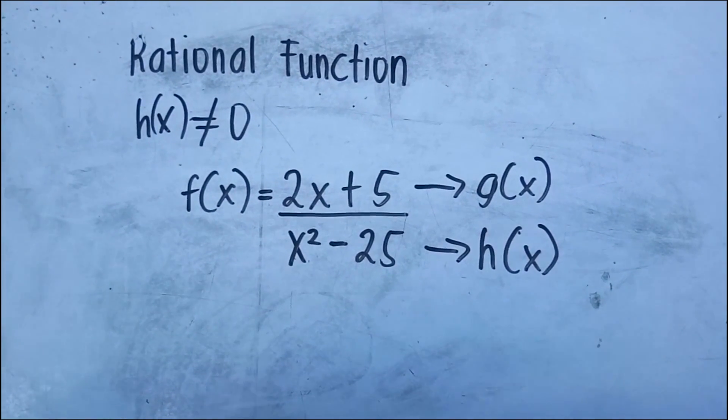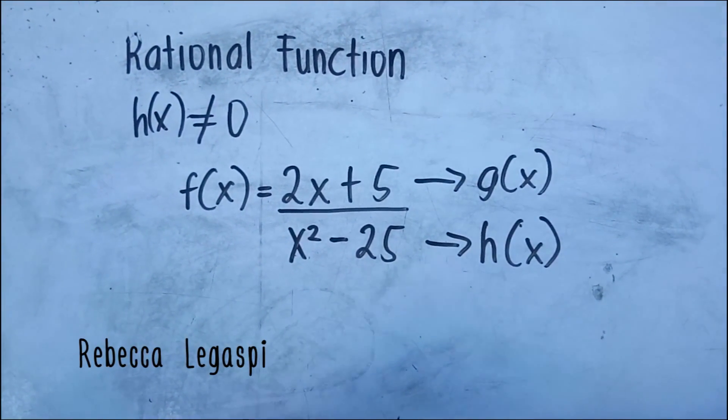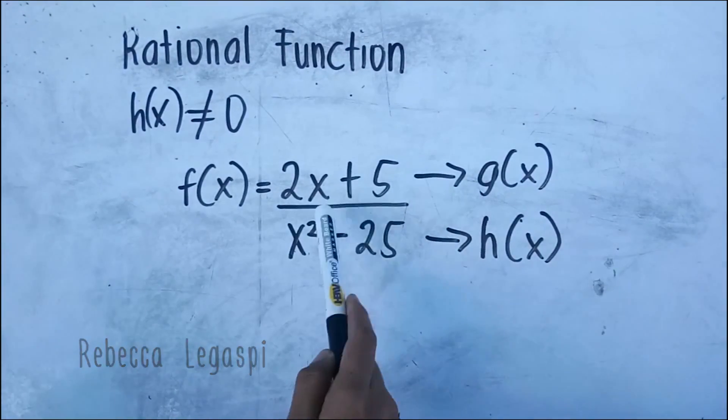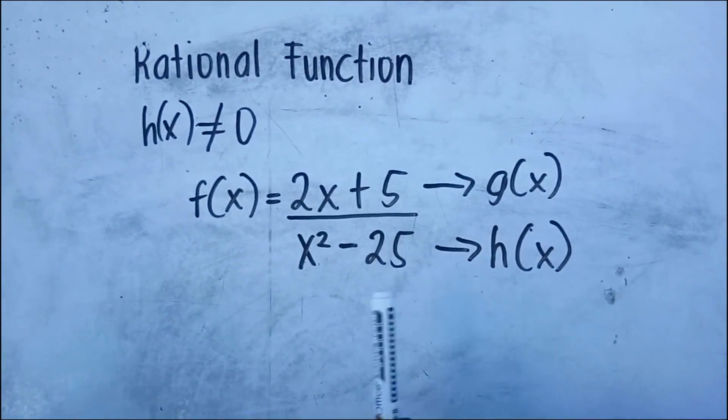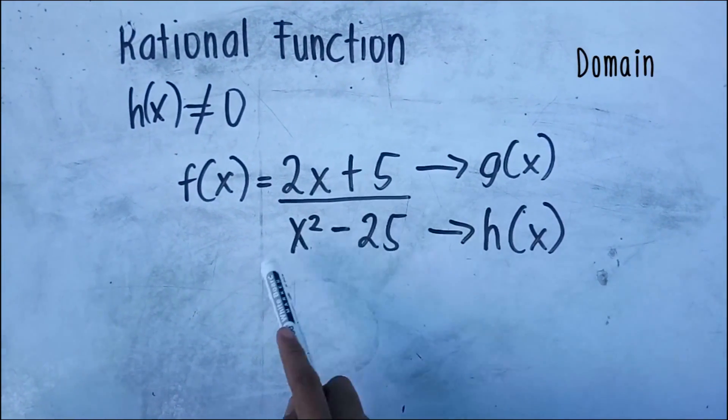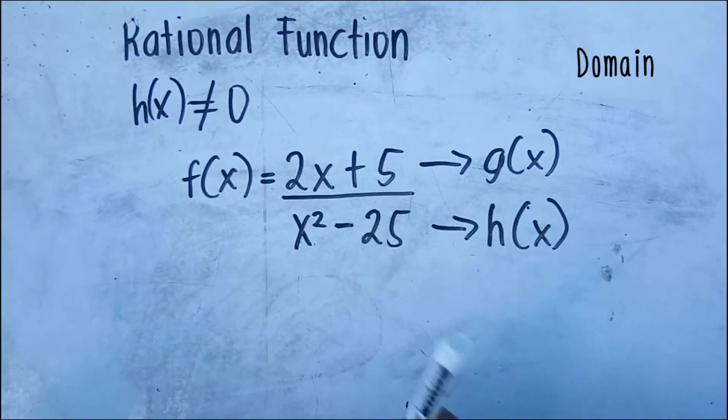Now let's define the domain of a rational function. The domain of a rational function consists of all real numbers except for the zeros of the denominator h of x. For example, f of x equals 2x plus 5 over x squared minus 25 — here g of x is 2x plus 5 and h of x is x squared minus 25.